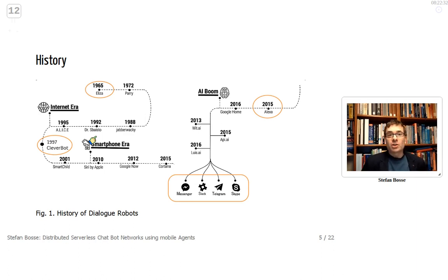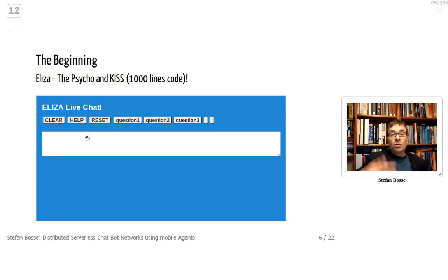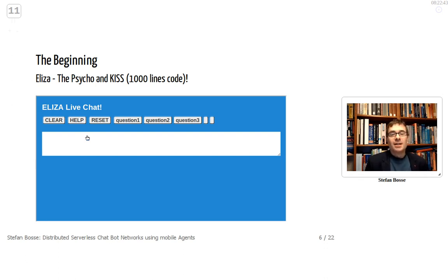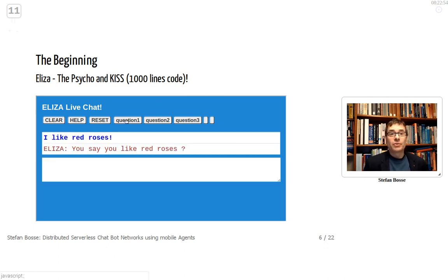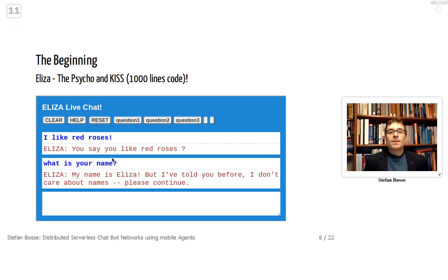Here we see ELIZA — a psychologist bot based on the KISS (keep it simple and safe) paradigm. It's about 1000 lines of JavaScript code integrated in the presentation. Let's ask it something: 'I like red roses' — it responds. Then: 'What is your name?' — it replies: 'My name is ELIZA, but I've told you before I don't care about names, please continue.'